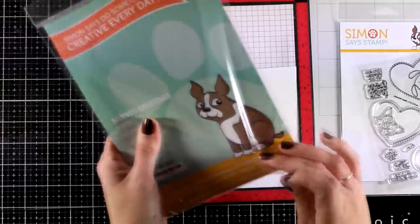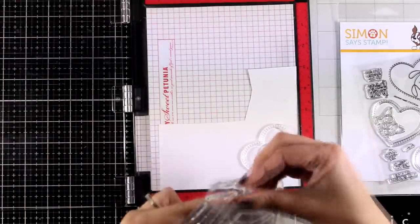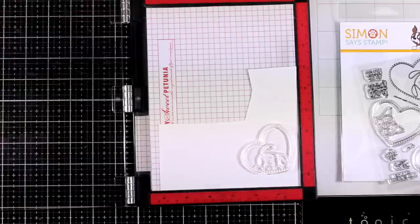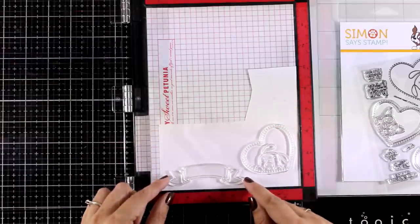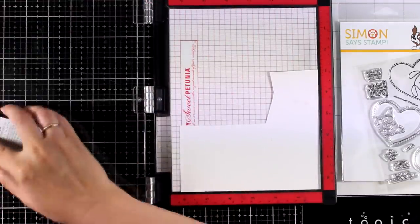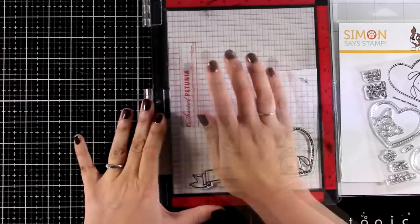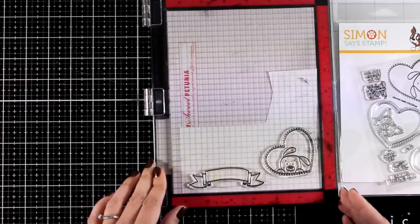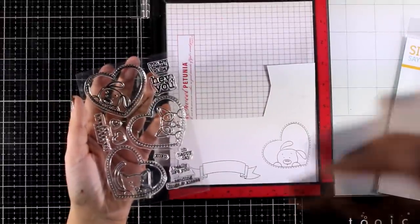I decided to use one of the banners from this banner stamp set that has come out a couple of months ago. This one is called Banner Greetings and it comes along with many banner designs and lots and lots of sentiments and I think it's one of those stamp sets that you can keep on using again and again. So anyway I am stamping everything with black ink and then I'm also going to stamp the sentiment inside the banner.